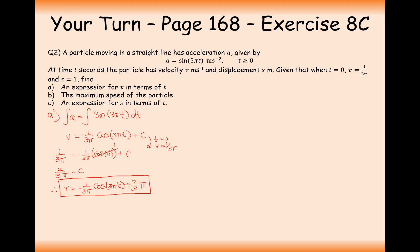To find the maximum speed: the maximum value of cos is 1, achieved at t equals zero. Substituting 1 for the cosine term gives negative 1 over 3π times 1 plus 2 over 3π. That equals 1 over 3π, so the maximum speed is 1 over 3π meters per second.